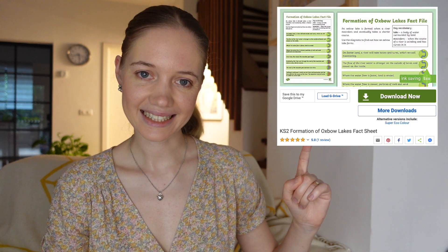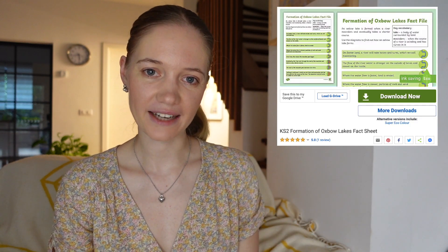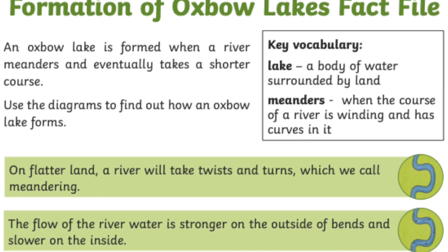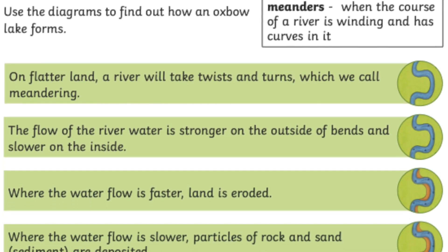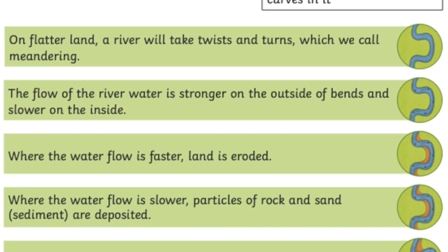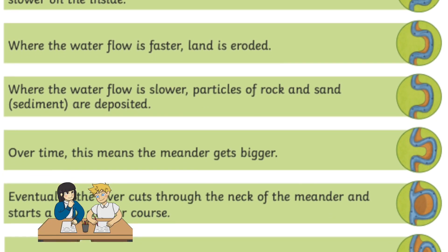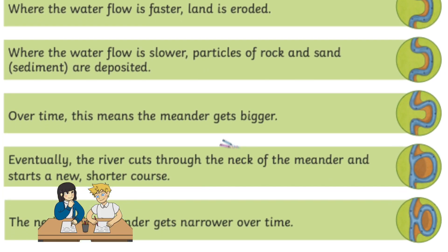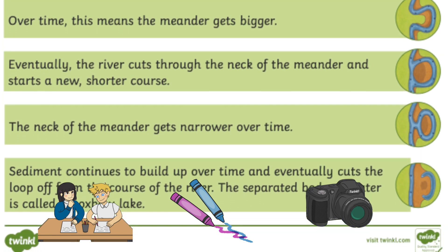Your children might want to learn about the formation of an oxbow lake with this Key Stage 2 Formation of Oxbow Lakes fact sheet, which has clear diagrams in order to help children understand how oxbow lakes are formed. This could be used to support children in writing a report on oxbow lakes, making a poster, or filming themselves talking about the process of the formation of an oxbow lake.